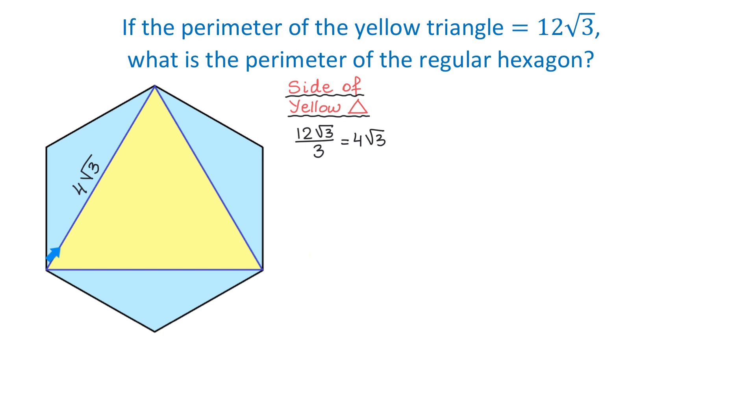To find the perimeter of the regular hexagon, first we need to find one side. And for this we will use one of these blue triangles, for example, this one.